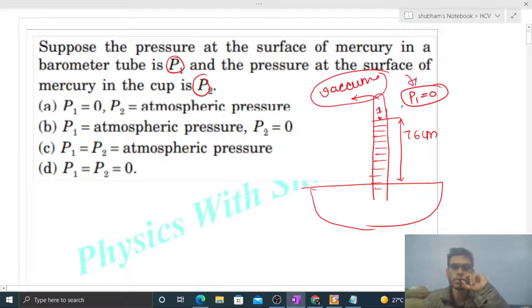So pressure at point 1 will be zero. And if we have here a point, let's say point 2, then there will be atmospheric pressure, right? So P2 will be atmospheric pressure.